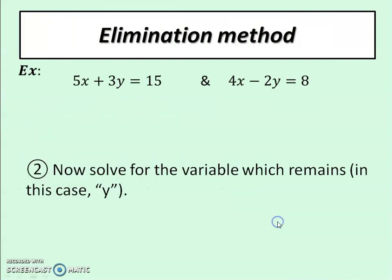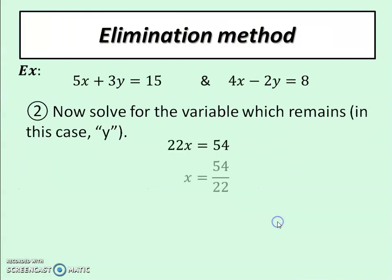And when I solve, I divide, and I end up getting x is equal to 54 over 22, which simplifies to 27 over 11. Is it okay that that's a fraction? That it's not an integer? Sure. That happens sometimes. That's all right.